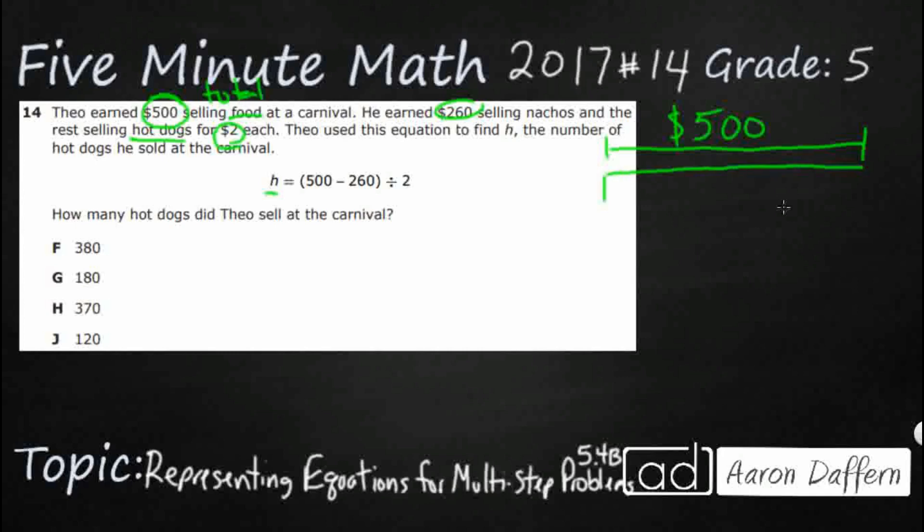So, we're going to kind of cut this into chunks here, and we'll say nachos for $260. And then he used the rest selling hot dogs for $2 each. And so, we need to find the number of hot dogs. Well, first, what we need to do is we need to figure out first, how much is this little chunk that's left? And then once we figure out that chunk that's left, we've got to figure out how many $2 hot dogs can you sell out of that chunk?